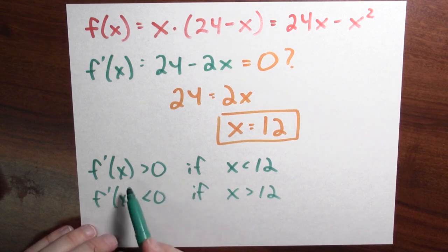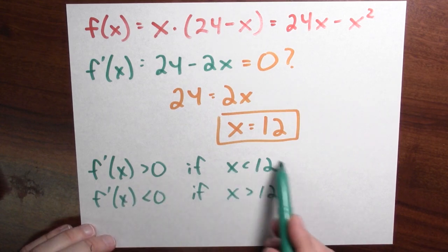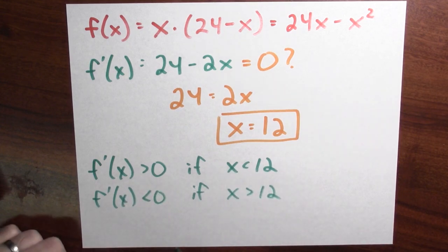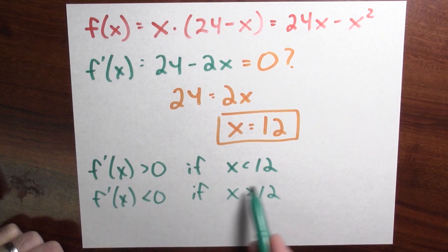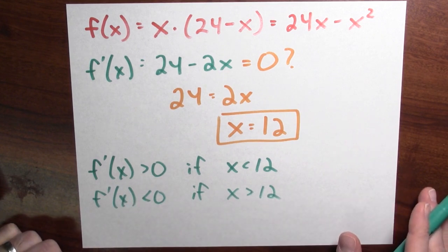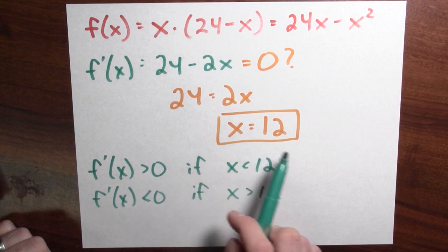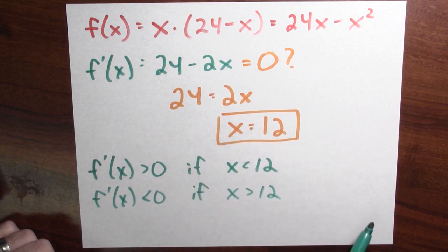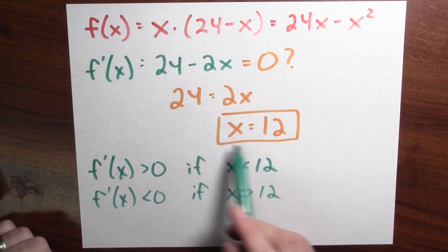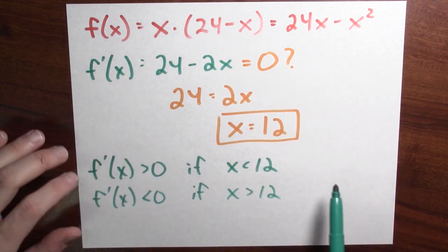What does that mean? Well, that means the function's increasing for x values less than 12. And the function's decreasing for x values bigger than 12. So the function goes up, gets to 12, and starts going down. What kind of point does that make 12? Well, that must be a maximum.